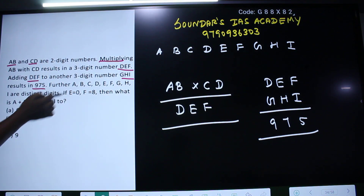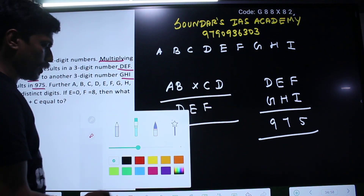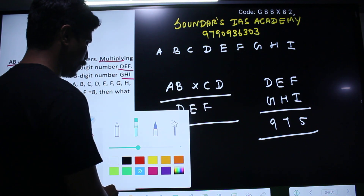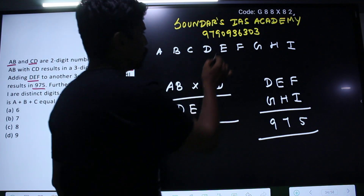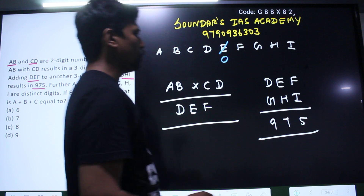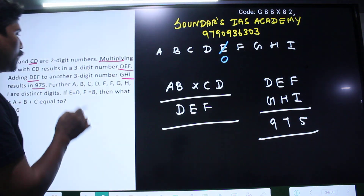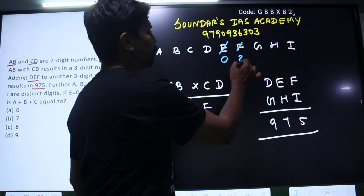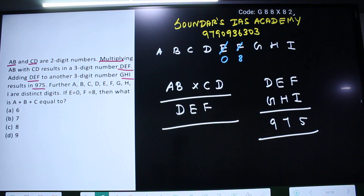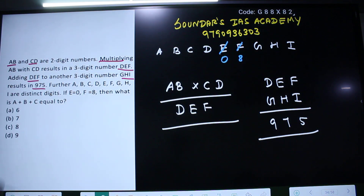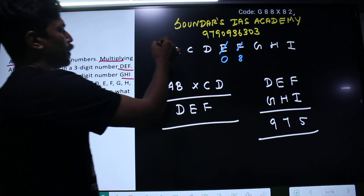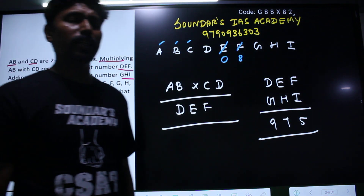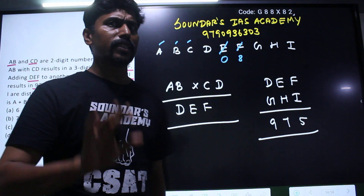If E is equal to 8, then what is A plus B plus C? If E is equal to 8, this is the question.